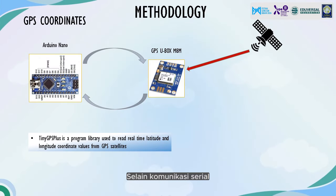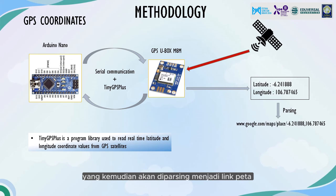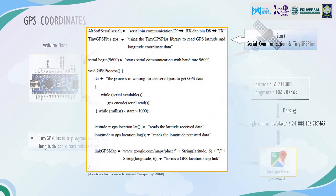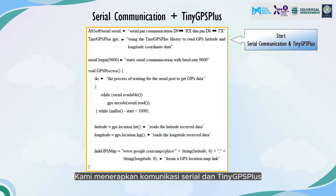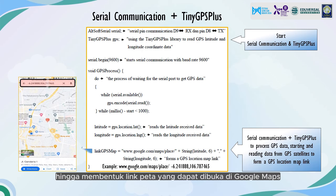Besides serial communication, the GPS module also uses the TinyGPS Plus library to get latitude and longitude coordinates, which are then passed into a map link integrated with Google Maps. We implement serial communication and TinyGPS Plus in the programming to get data from GPS satellites and form a map link that can be opened on Google Maps.